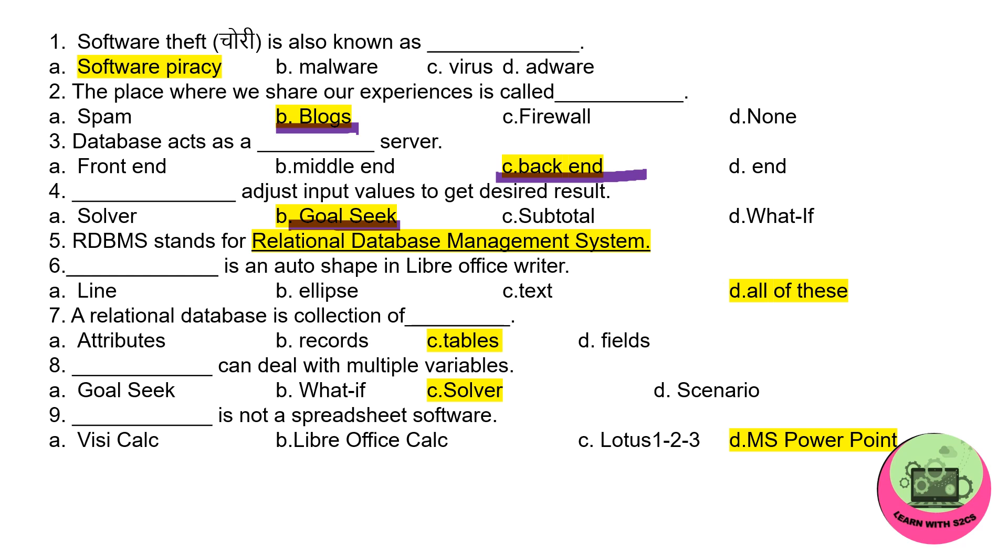RDBMS stands for - some full forms will also be asked, there may be chances that some full forms will be in your exams. RDBMS stands for Relational Database Management System. Dash is an auto shape in LibreOffice Writer, so it will be all of these: line, ellipse, text - all are auto shapes.